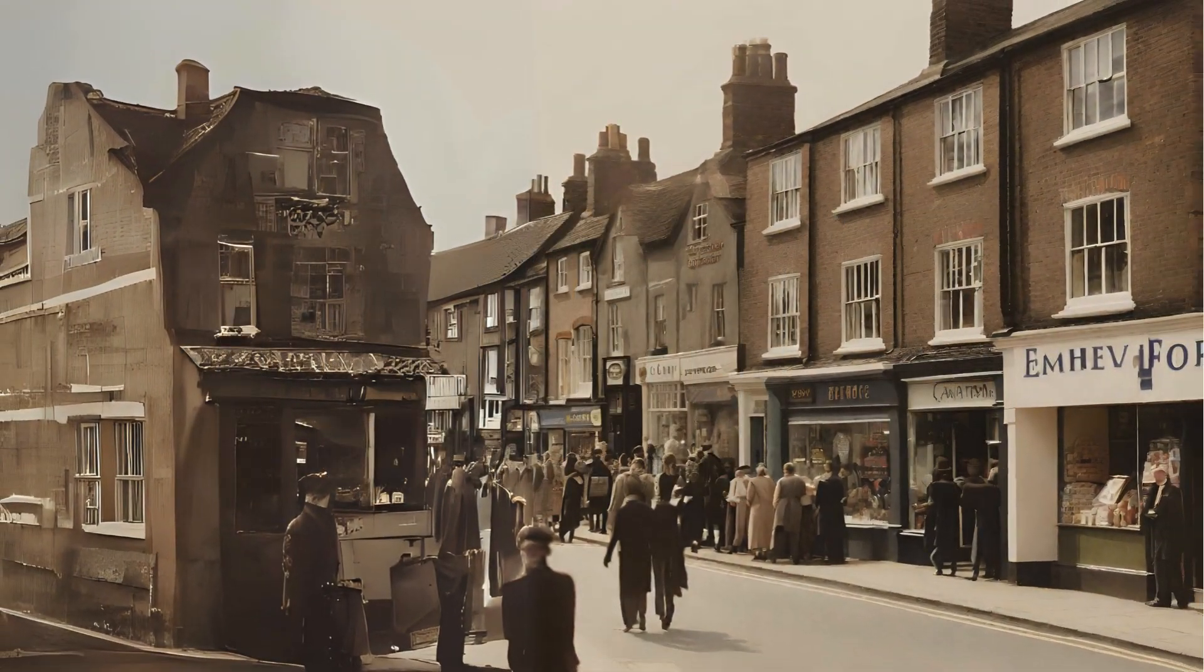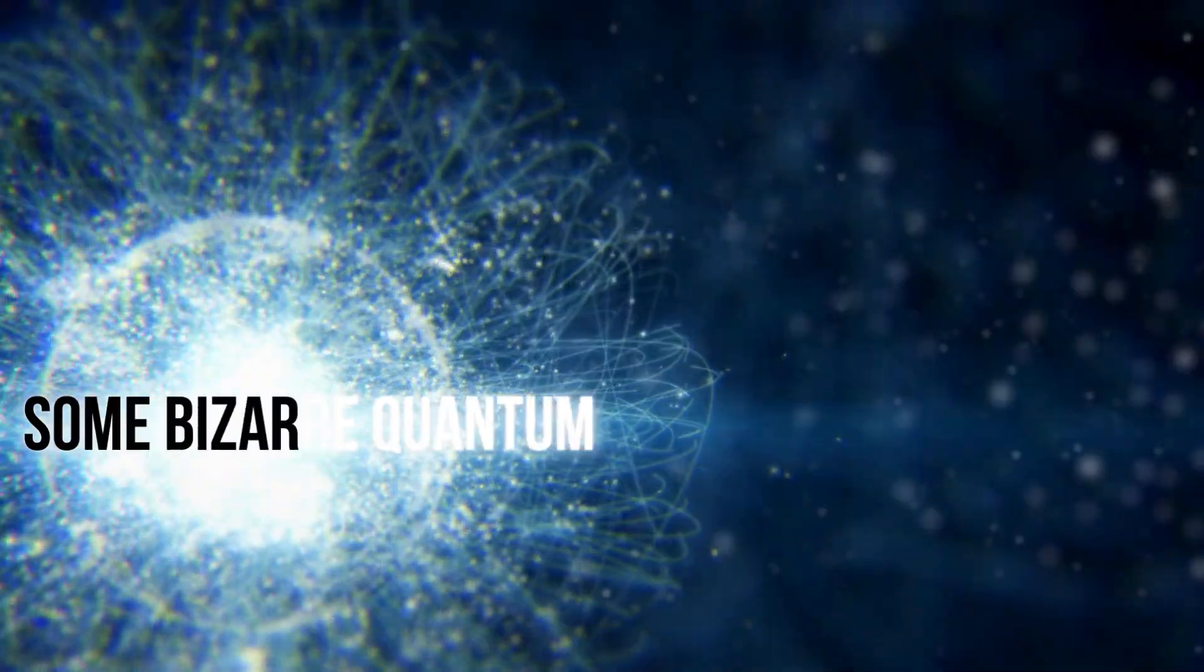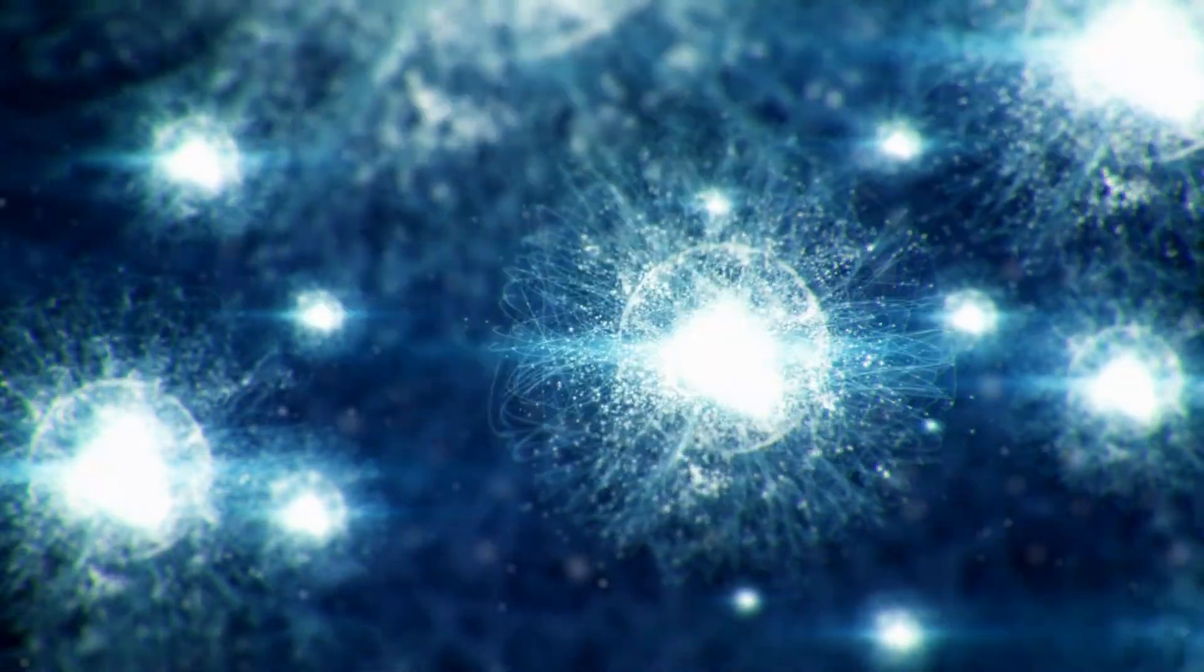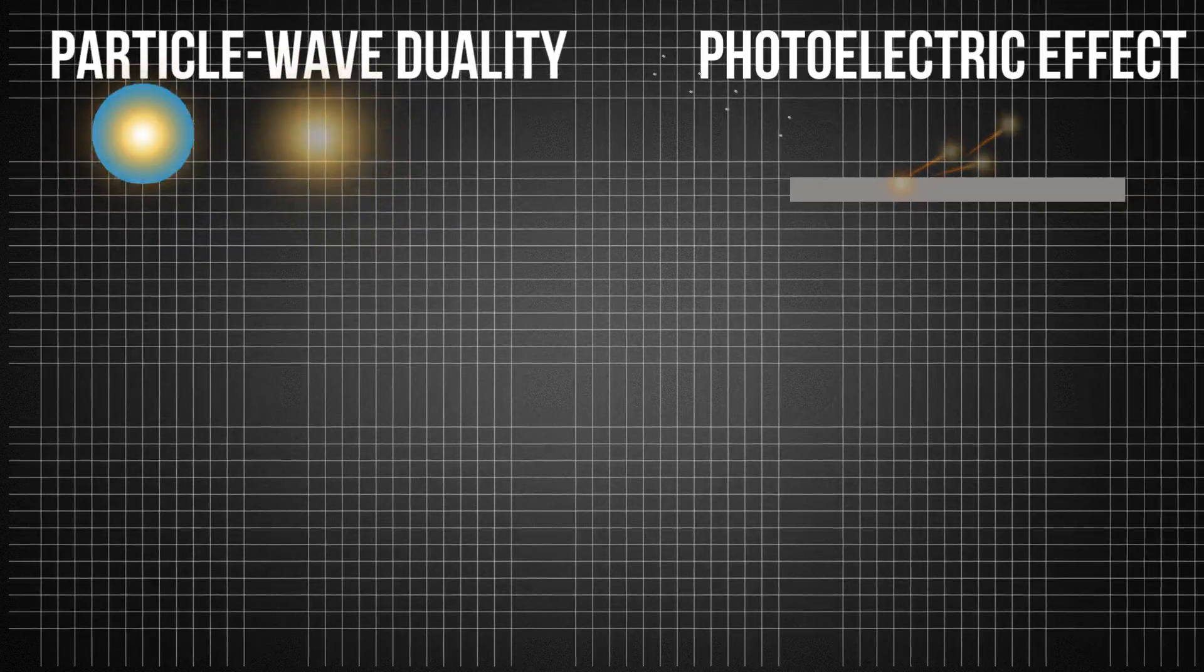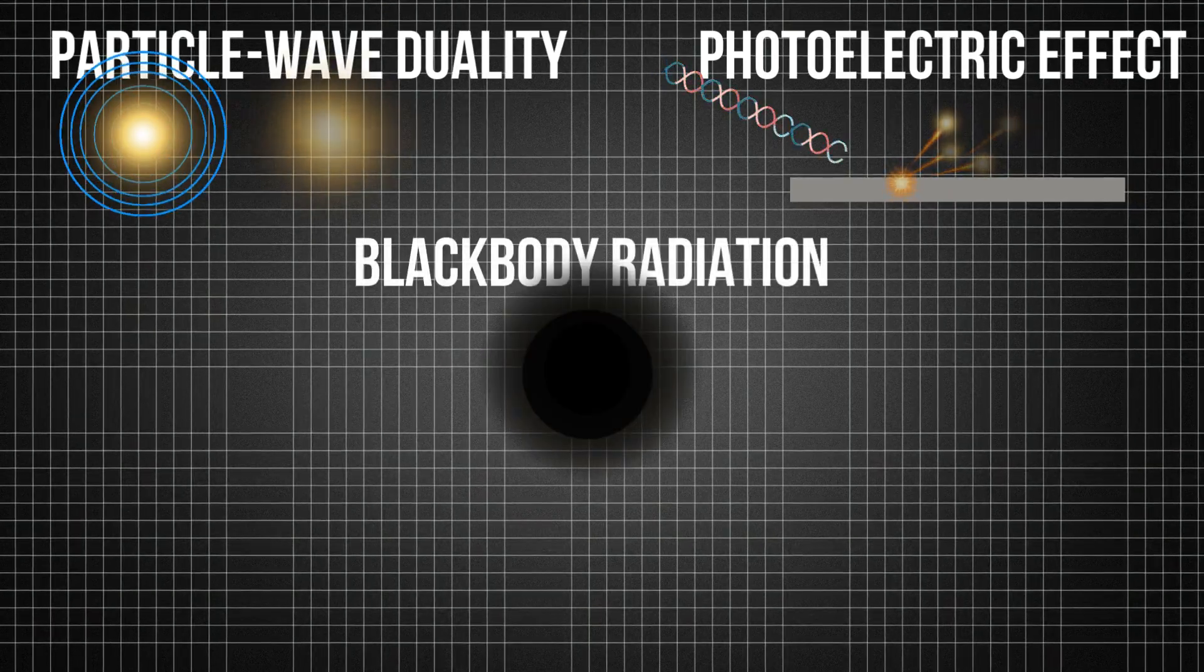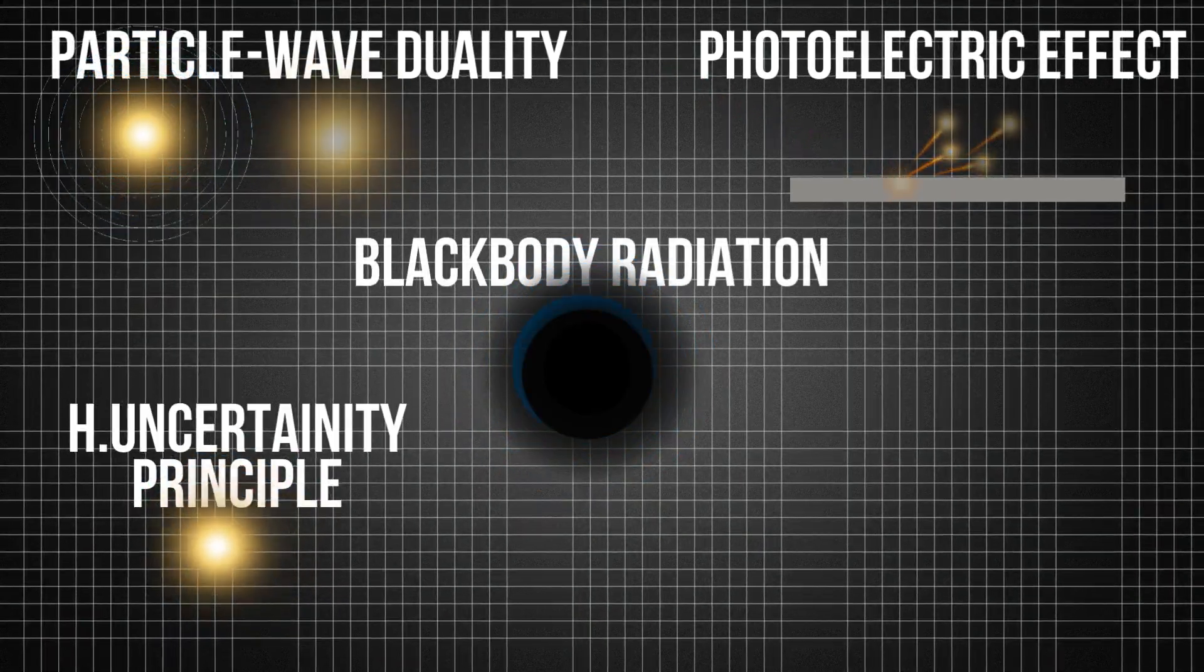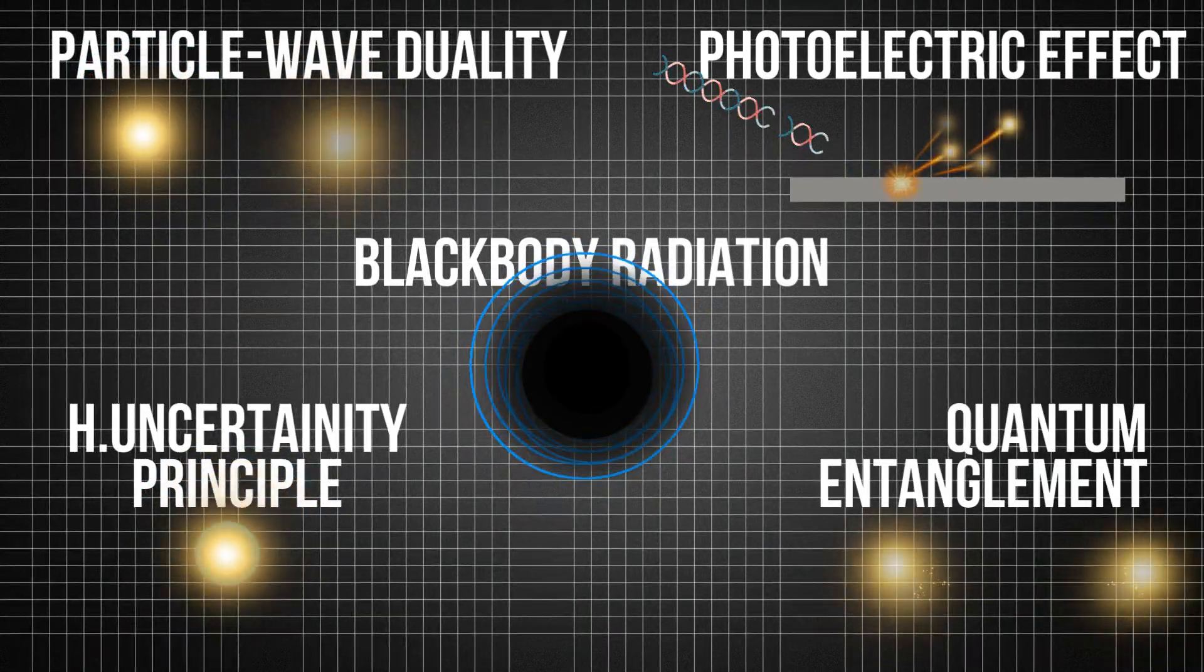In the 1900s, physicists already worked on some bizarre quantum mechanical properties of the subatomic world, like particle-wave duality, photoelectric effect, black body radiation, Heisenberg uncertainty principle, quantum entanglement, and so much more.